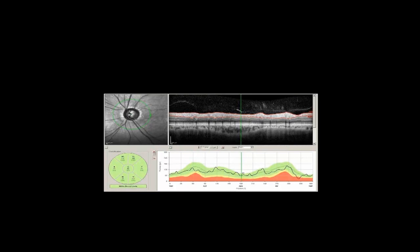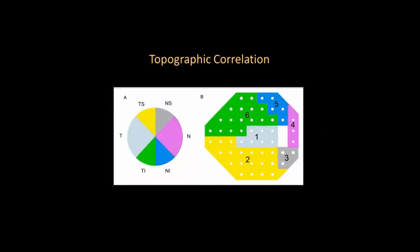Traditionally, with all OCT machines, we have been measuring the retinal nerve fiber layer in the peripapillary region — 360 degrees with 768 points. Small areas of abnormality will not be represented in the average thickness of a quadrant, especially if they are focal losses. But we need to see if these losses correspond to visual fields, and also whether they represent an artifact or a real loss.